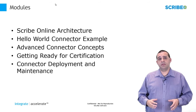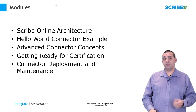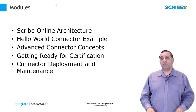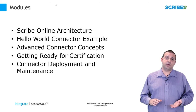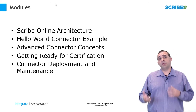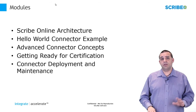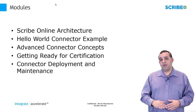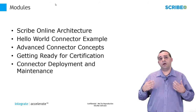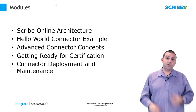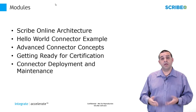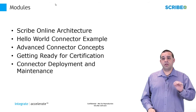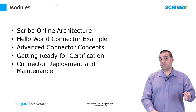After we get through the Hello World examples, we'll go into some more advanced connector concepts. After that, we'll talk about certification — all the things your connector needs to do and be compliant with in order to be certified and included in the Scribe Online cloud system and moved into our marketplace. Then we'll discuss deployment and maintenance: how you deploy your connector, either in the cloud hosted by Scribe, or on-premise at your individual customers' agent machines.